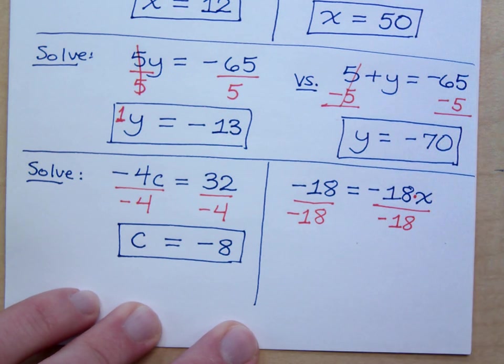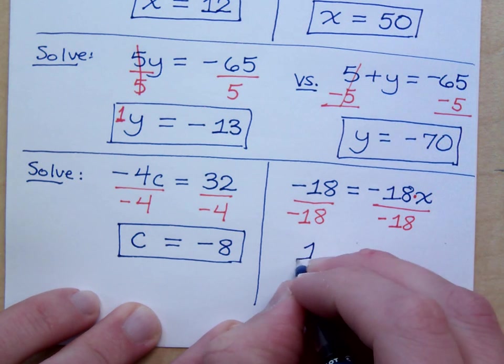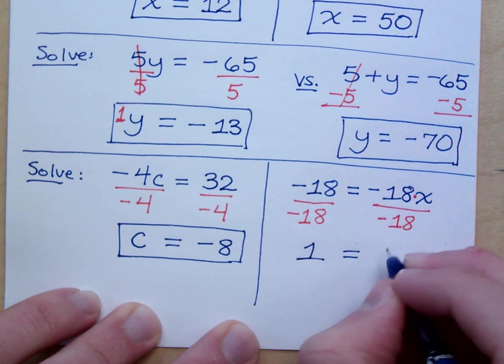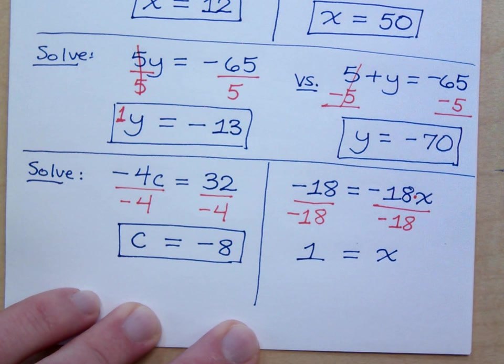So 100 divided by 100 is 1. Negative 18 divided by negative 18 is 1. Over here we have just x.